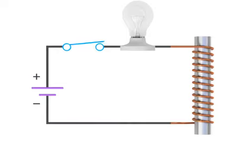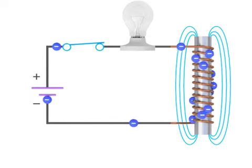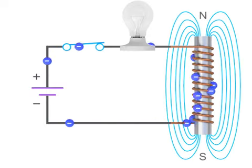As the switch is closed and the current flows through the circuit, the electromagnetic field in the inductor forms and expands rapidly.